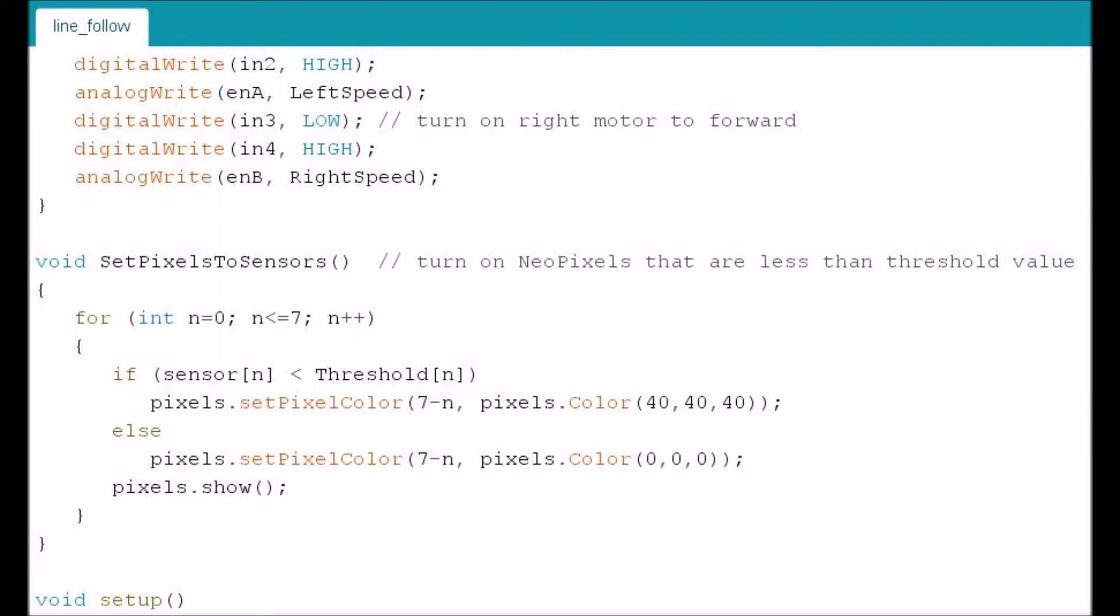This is another function called set pixels to sensors. It illuminates the NeoPixel if the QTR sensor reads above that threshold value.